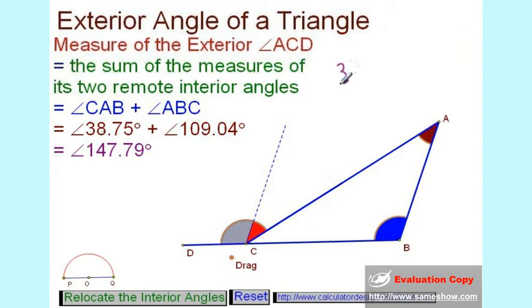The numerical value of these two angles: angle CAB is 38.75 degrees, which you can see is given here, and the other value, angle ABC, is equal to